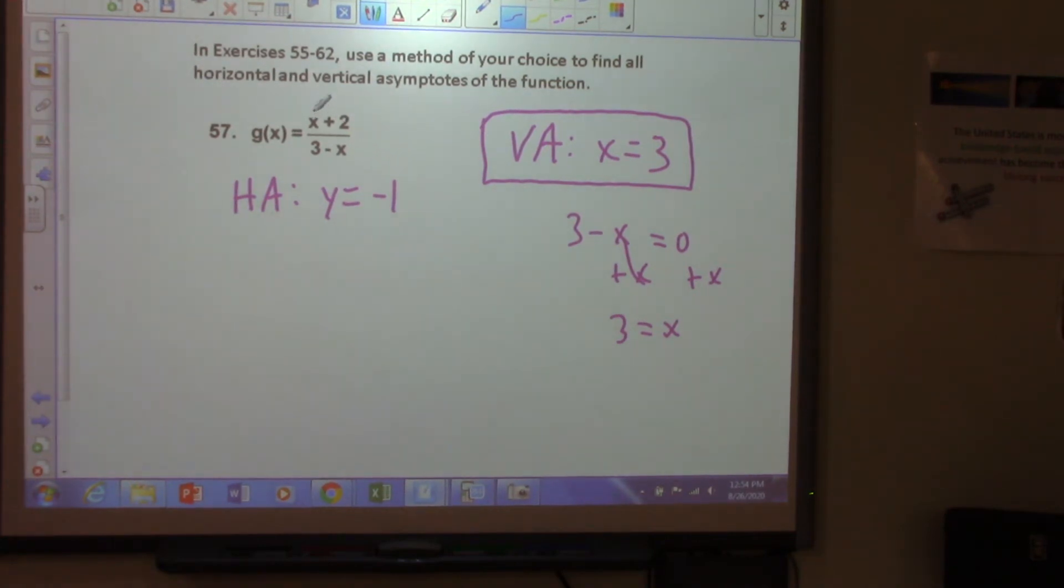And down here is negative x to the 1 power. So what is our horizontal asymptote? It's going to be y equals 1 over negative 1, right? So that would be our horizontal asymptote. Questions on that one?